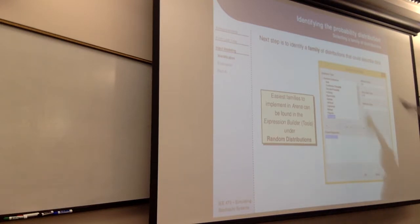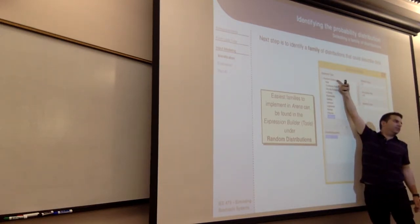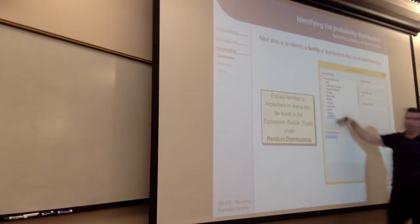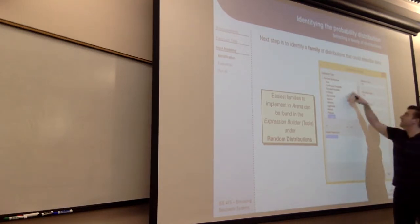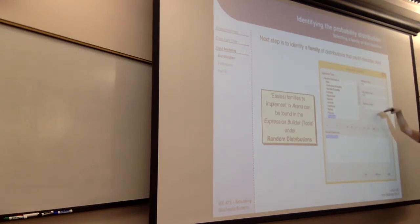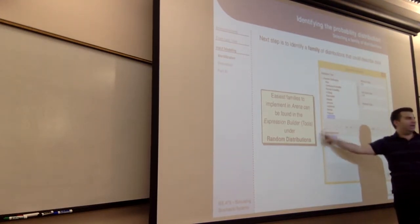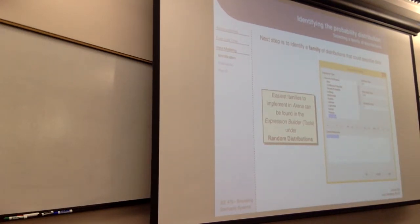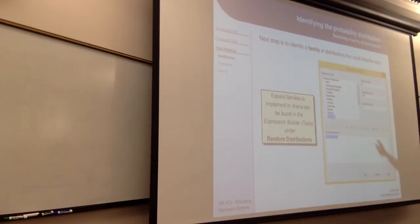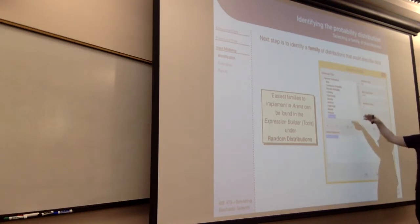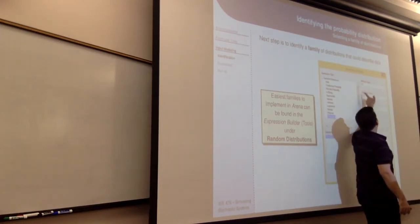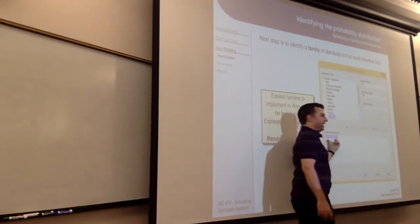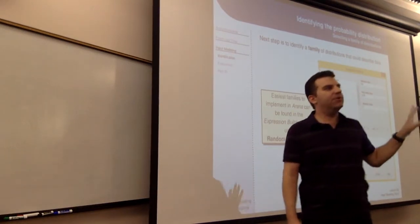If you need a reminder of what distributions are available in Arena, go to Tools → Expression Builder. Under Random Distributions, it lists every distribution Arena can sample from. Click one, and it tells you the parameters and gives you an expression you can copy and paste into the process block for that service time distribution. This is often more useful than Googling Arena syntax — just click on, say, log-normal, and it gives you extended descriptions of all arguments and builds the expression for you.